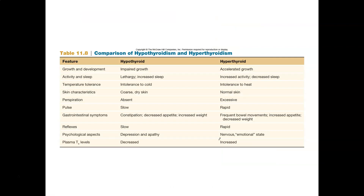In hyperthyroidism — think Graves' disease — you're seeing things like exophthalmos, which is the bulging eyes. Increased oxygen consumption, metabolic heat so increased heat for the body, muscle weakness, protein catabolism, weight loss, anxiety, irritability, insomnia, increased blood pressure — so an overall nervousness or nervous state of the body. That's the hyperthyroid type of symptoms.